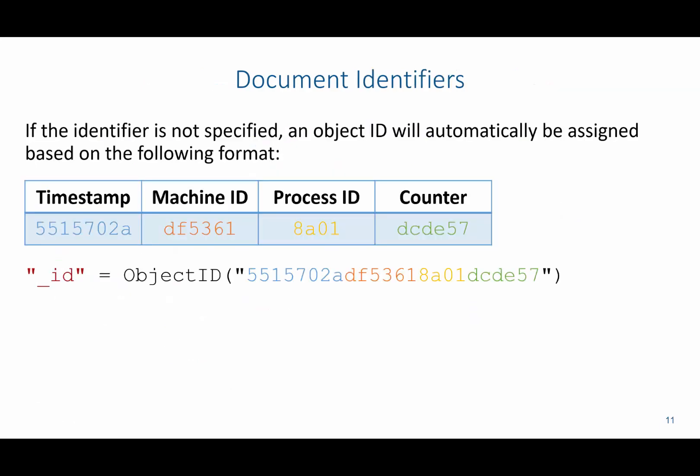In MongoDB, you can optionally specify the identifiers, or you can have it automatically create them. The identifiers are represented using underscore id. This id is generated from the following: the first few hexadecimal characters come from the timestamp, the next from the machine id, then the process id, and then the counter. These are merged together to generate what is called an object id, which is the unique identifier for that specific document.